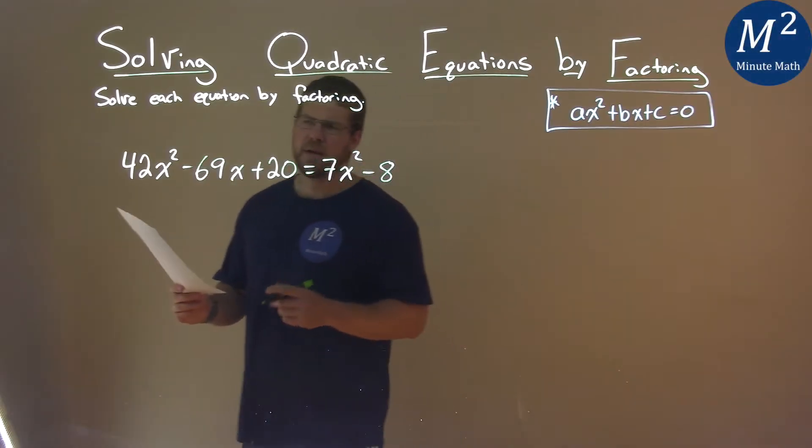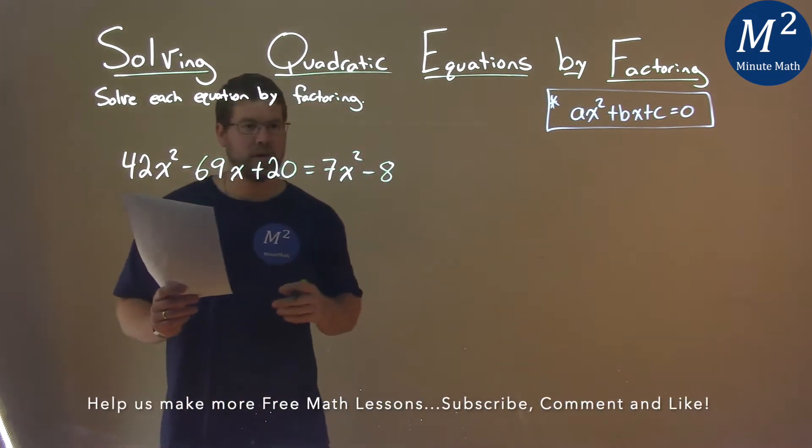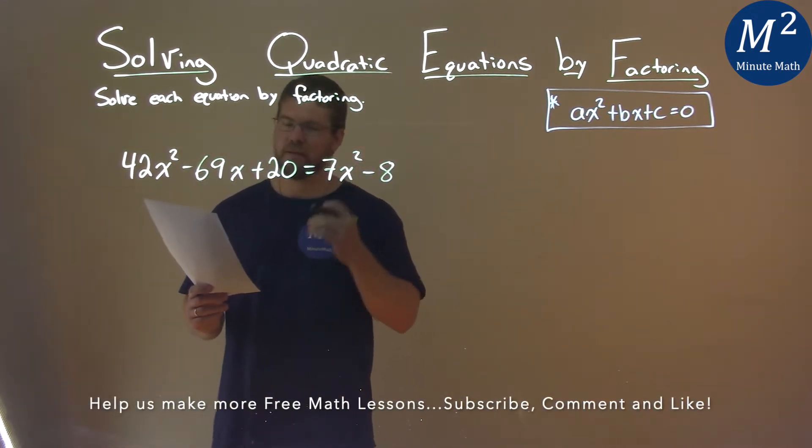We're given this problem right here: 42x squared minus 69x plus 20 equals 7x squared minus 8, and we need to solve this by factoring.